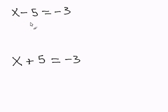Here we have x minus 5. This is the same thing as having x plus negative 5. So to get rid of this 5, I have to add 5, because 5 plus negative 5 is 0.